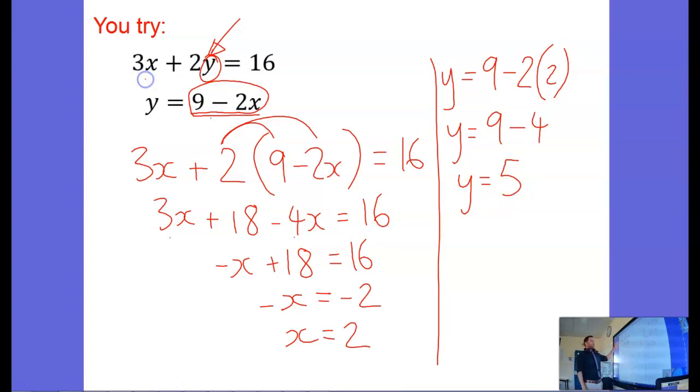Let's check it works. 3 times x, 3 times 2 is 6. 2 times y, that's 10. 6 plus 10 is 16, it worked there. And does y equal 9 minus 2x? Well, 9 minus 2 times 2, that's 4. 9 minus 4 is 5. Yeah, it works, we're happy. Okay, that is the substitution method.